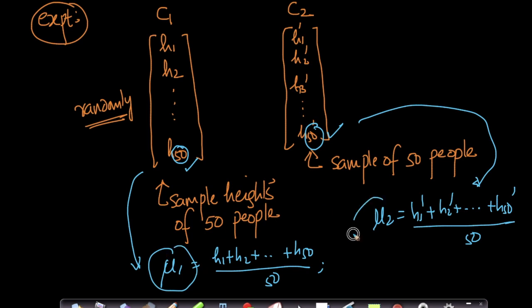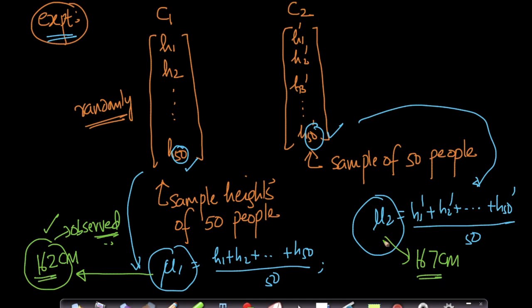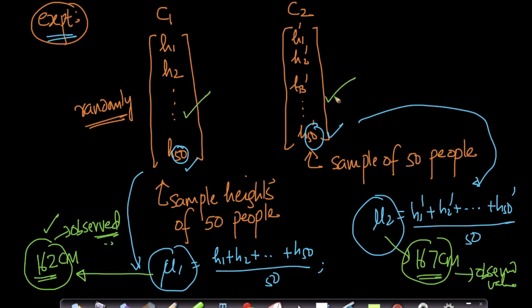Since we can't compute population means, we'll use sample means for our experiment. Let's assume that when I made the observation, I got mu1 = 162 centimeters and mu2 = 167 centimeters. These are observed values. When I took 50 random people from City 1, the average height was 162 cm, and from City 2 it was 167 cm.